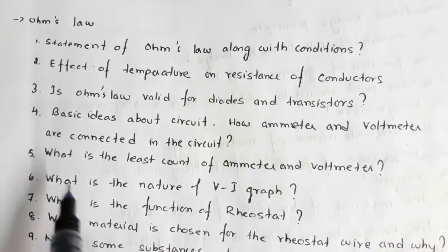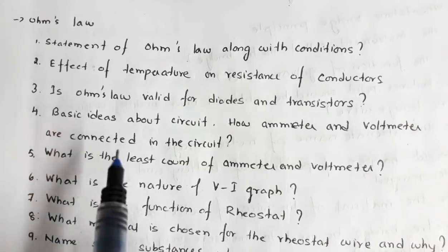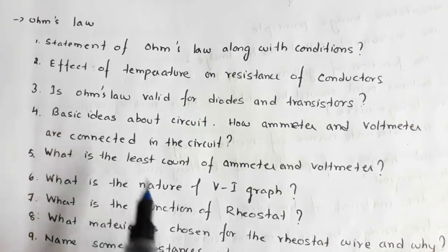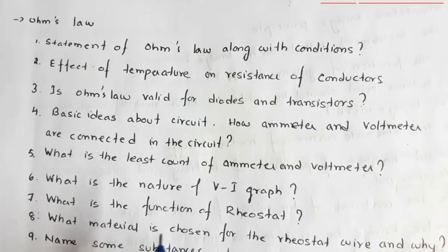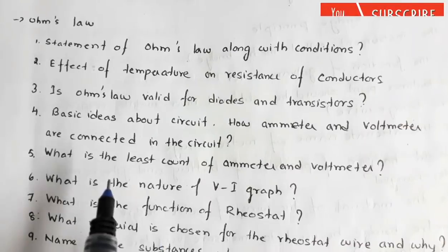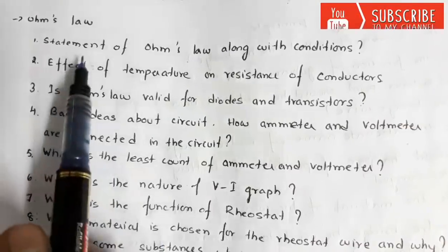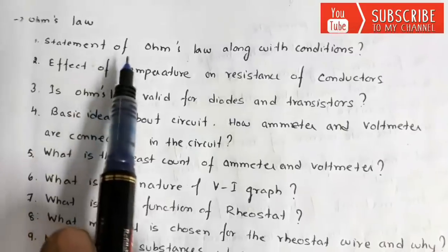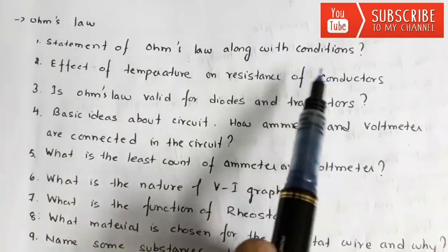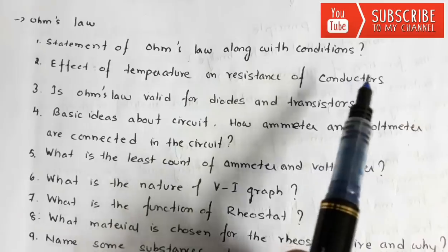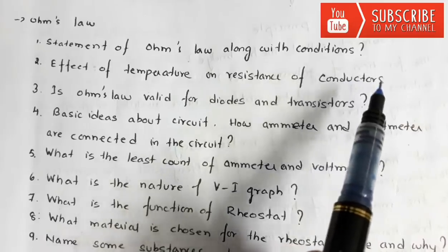Based on Ohm's law, you have one experiment wherein you'll be determining the unknown resistance from the current-voltage graph, and the other one is the potential divider. In these experiments you may be asked: what is the statement of Ohm's law along with the conditions? The condition is that the temperature should remain constant.